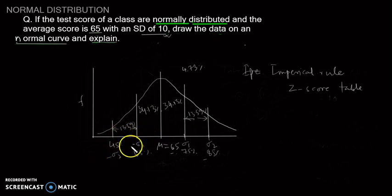We are moving by 10 on each side. Since sigma equals 10, we decrease 10 from 65 or add 10 to 65, and so on.